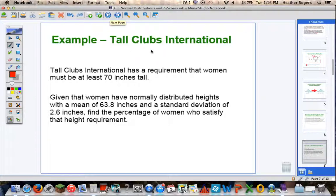An example. Tall Clubs International has a requirement that women must be at least 70 inches tall. So there's our data value that we're interested in, 70 inches tall. Given that women have normally distributed heights, so we have our normality, with a mean of 63.8 inches and a standard deviation of 2.6 inches, find the percentage of women who satisfy that height requirement. So let's go through our process.